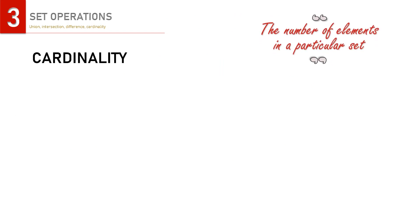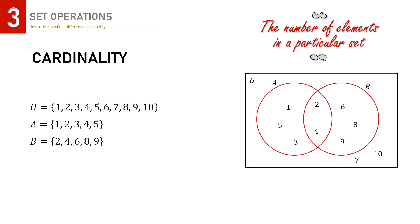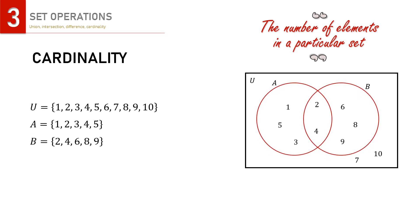The last concept to explain is cardinality in sets. Cardinality is the number of elements in a particular set. When we have the following sets, we can easily find the number of elements in each set, and we express the cardinality as shown.